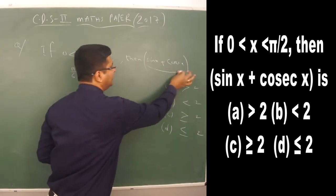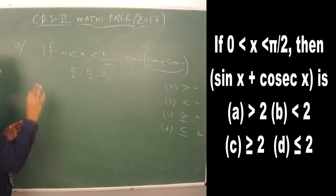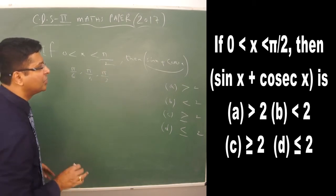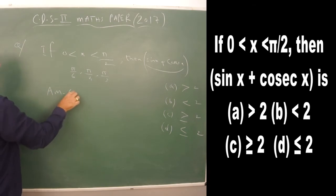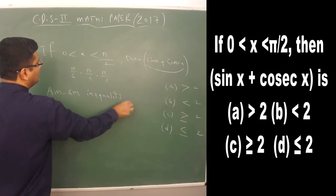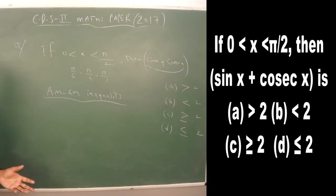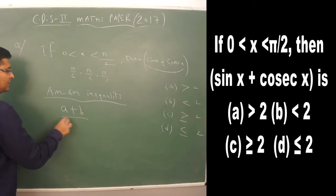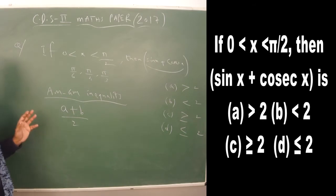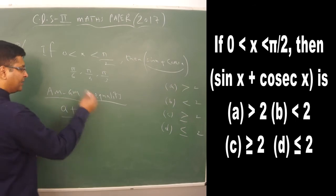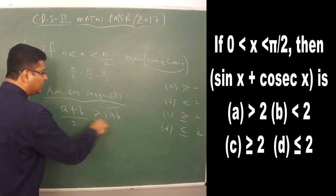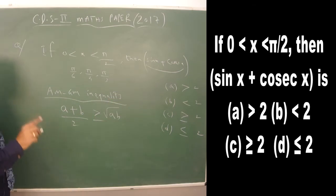The values sin x and cosec x are reciprocals of each other. The AM-GM concept states: for any two values a and b, their arithmetic mean (a+b)/2 is always greater than or equal to their geometric mean √(ab).